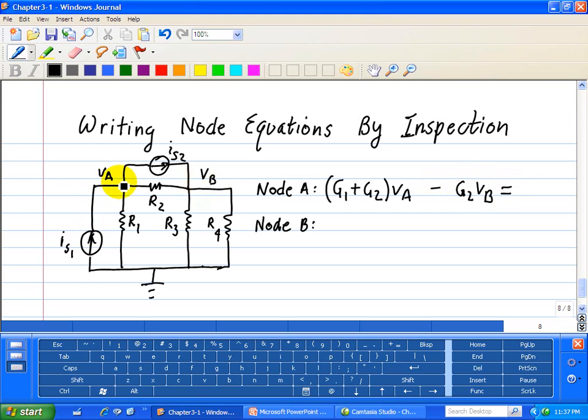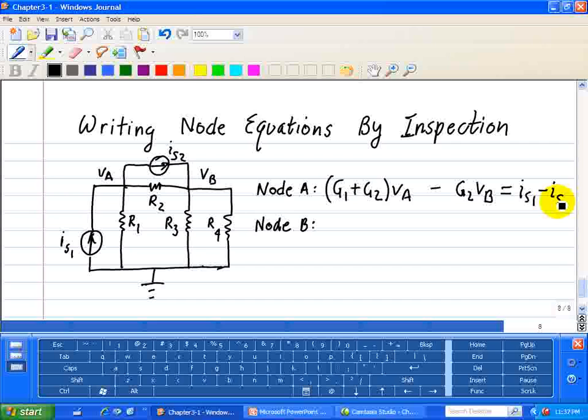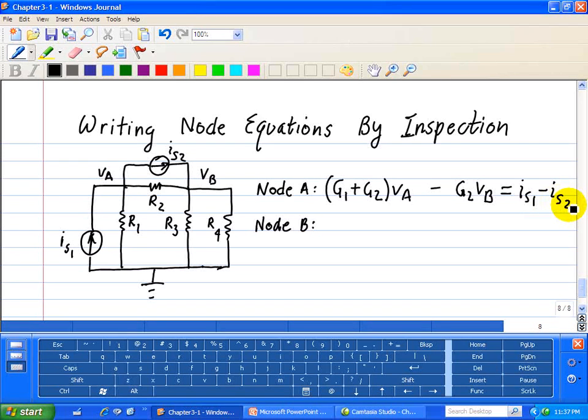now what's the current? Incoming is IS1, and the outgoing current is minus IS2. So that's node A.